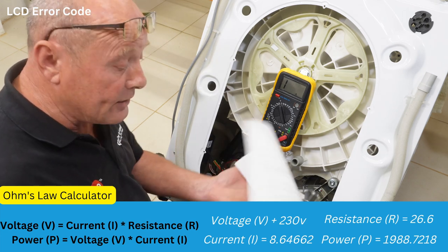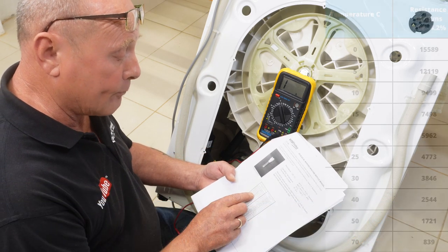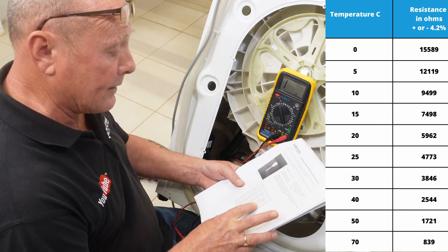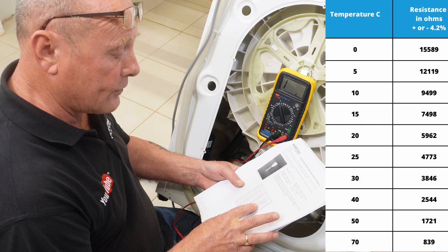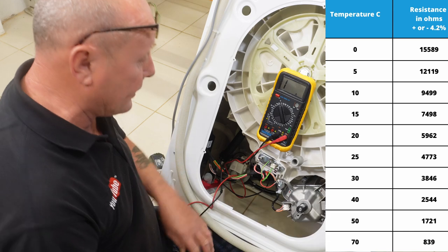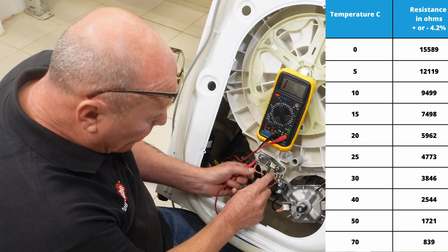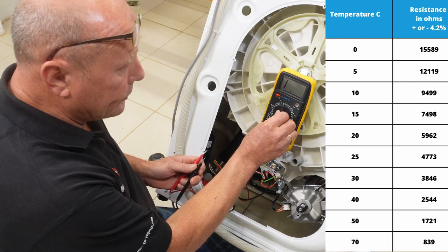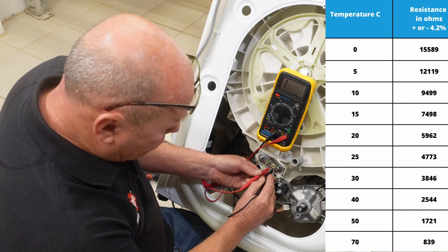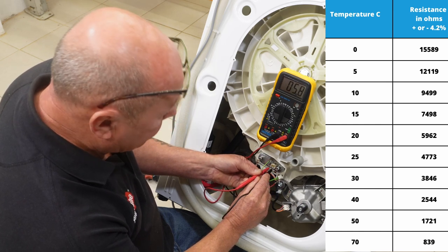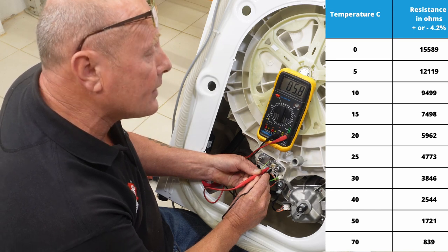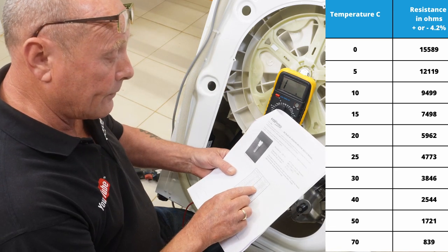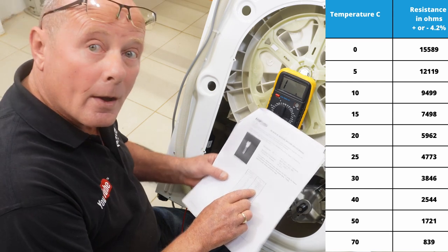To test the NTC sensor — with an air temperature of between 20 and 25 degrees — I would expect a reading somewhere between 5,962 and 4,773 ohms, closer to the 20-degree value. There's a small tab on the NTC sensor connector which you press up and the wiring comes away. Setting the multimeter to the correct range and doing a reading across the two pins on the NTC sensor, I can see a reading of 5,800 ohms. At 20 degrees it should be 5,962 — that's close enough.